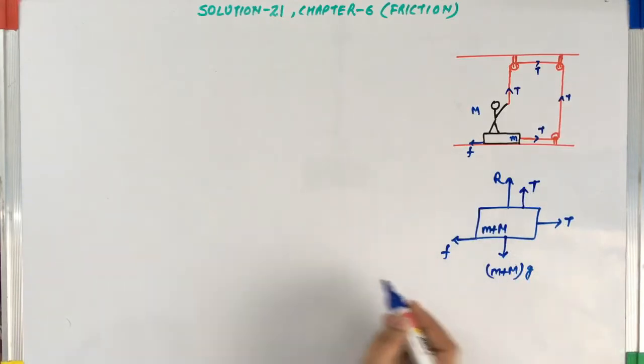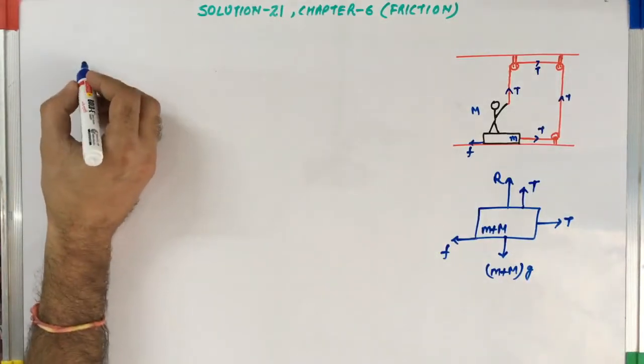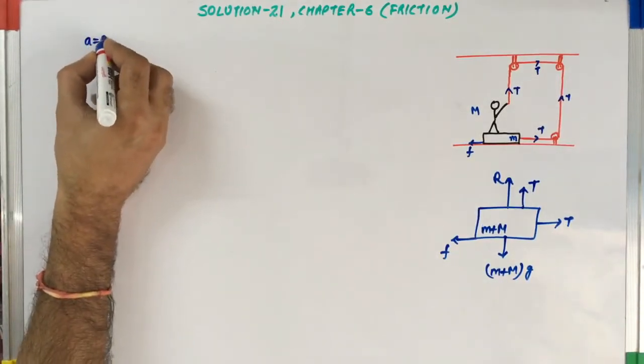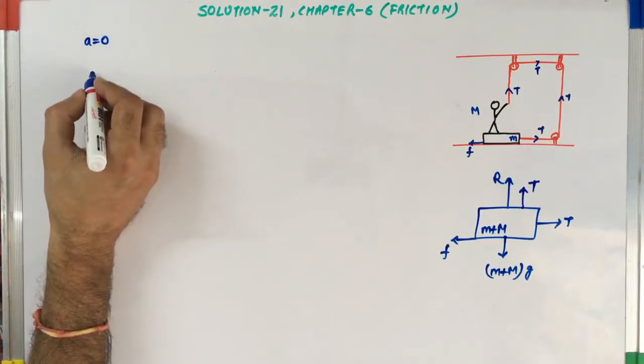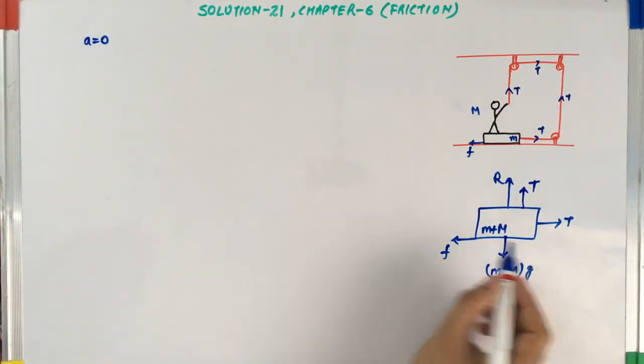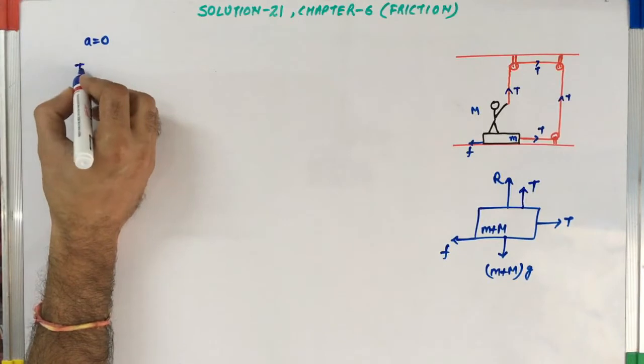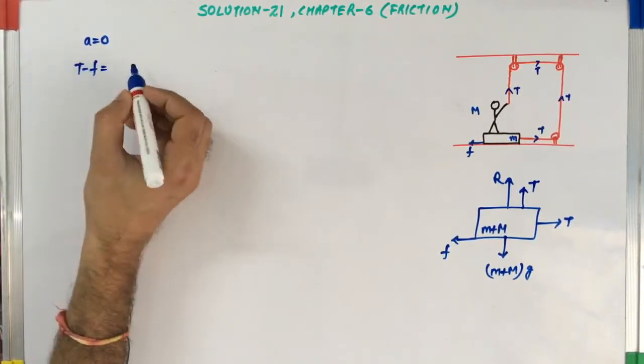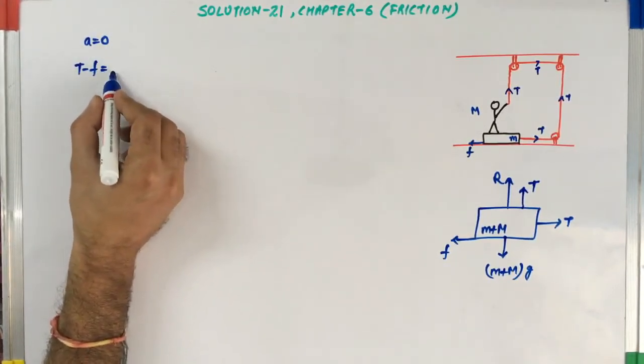Now since this block is not moving, that means the acceleration of this block is zero. So now writing the equation of motion in the horizontal direction, I can say T minus F is equal to mass into acceleration and acceleration is zero.